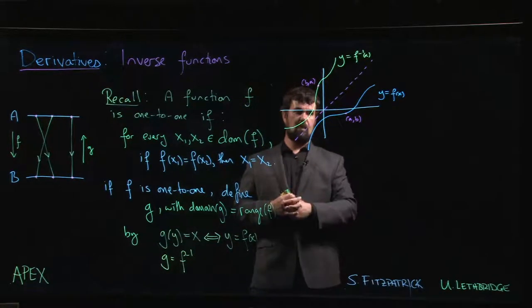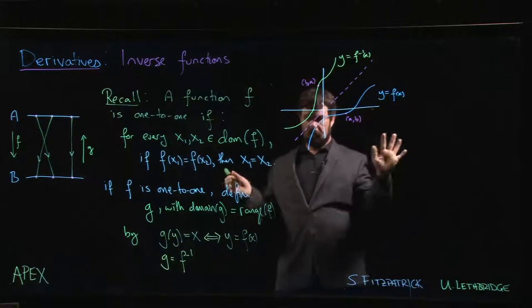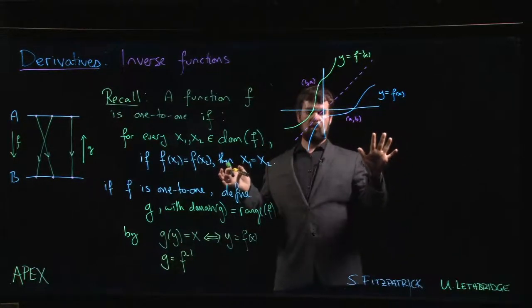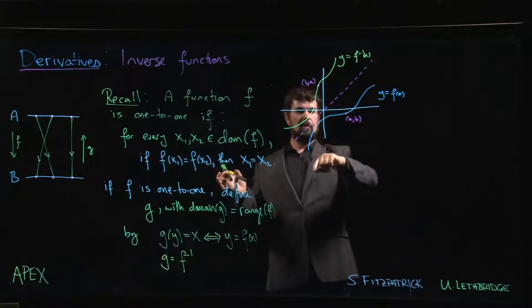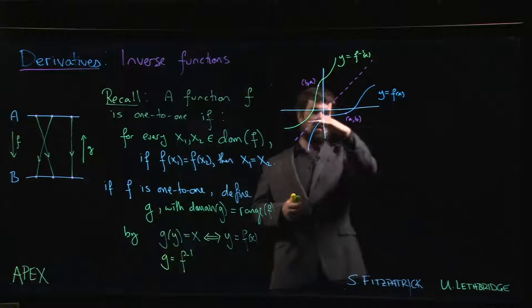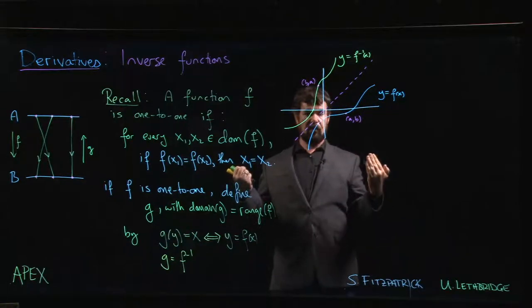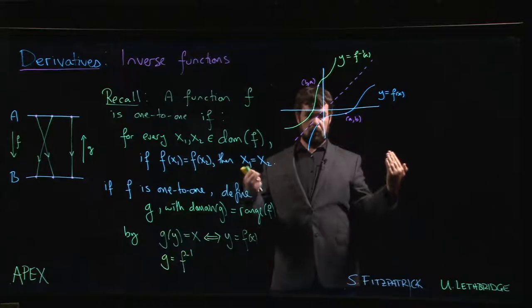Graphically we have this sort of idea here. So here's some function. The fact that it's one-to-one is reflected in this idea that if you were to cut with horizontal lines, there's no point on the graph where a horizontal line is going to cut the graph more than once.